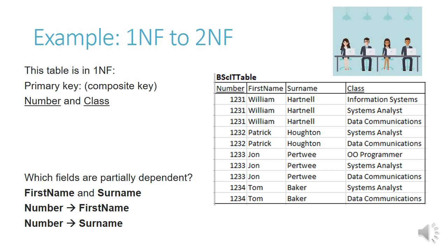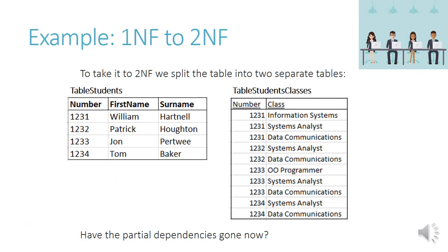An example of taking a table from first to second normal form: this table is in first normal form and has a composite primary key. It's the students table we saw earlier — students studying for a BSc IT and the subjects or classes they take. Number and class is the primary key. The fields partially dependent — dependent on only one field of the primary key — are first name and surname. In notation: number leads to first name, and number leads to surname. The student's name is not at all dependent on the class they're taking.